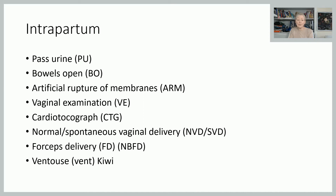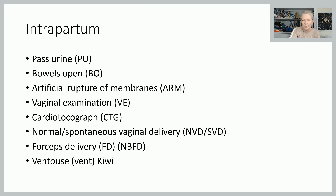Spontaneous or normal vaginal delivery may be written as SVD or NVD depending on where you are in the country. Forceps delivery can be written FD, but more often they are Neville Barnes forceps, so you'll see NBVFD. Ventouse used to involve a large plastic or metal cup attached to a suction machine, but more often now we use Kiwi cups — a small handheld plastic device — so it's often a Kiwi delivery rather than ventouse in the traditional sense.